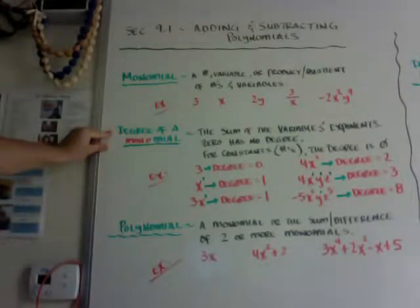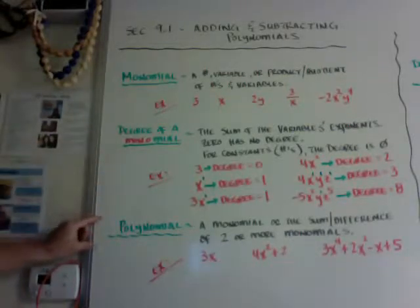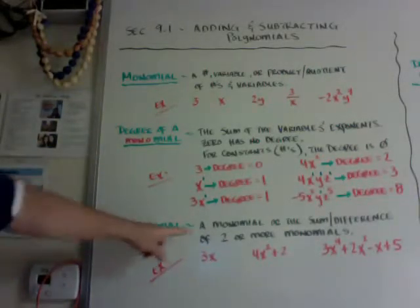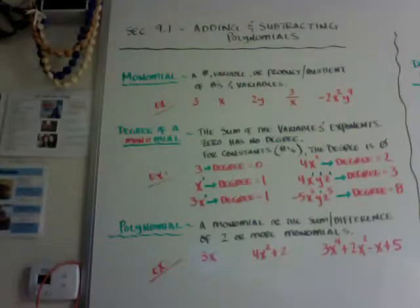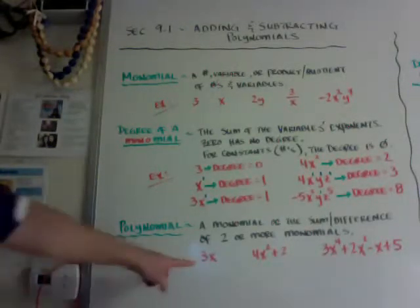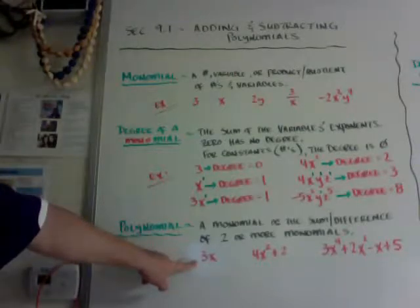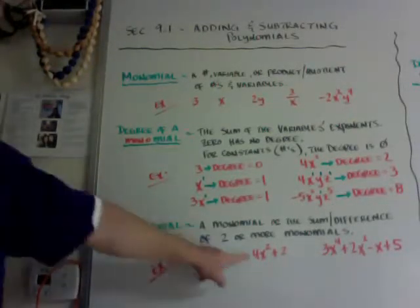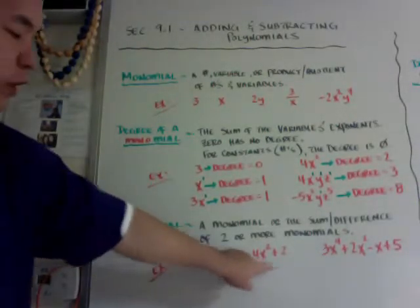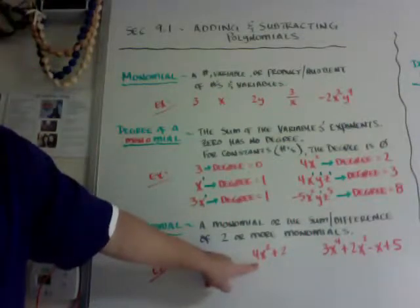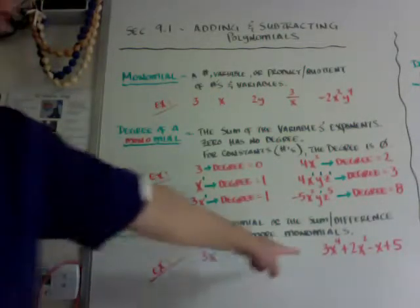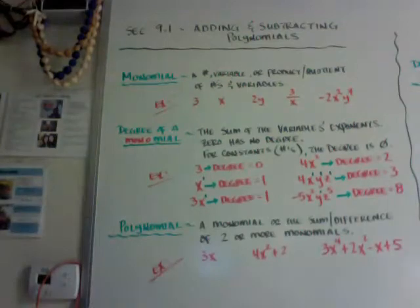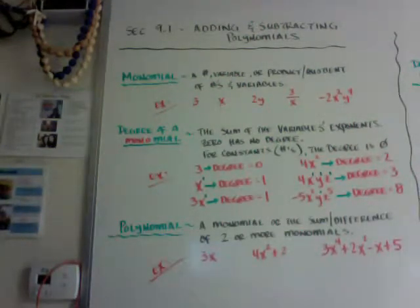Be careful because I'm going to show you the degree of a polynomial later. A polynomial definition is a monomial or more — two or more monomials that are added together. So a monomial is also a polynomial. You can see it's two monomials added together, so that's a polynomial. Or you can see there's four monomials added together, and that is also a polynomial.